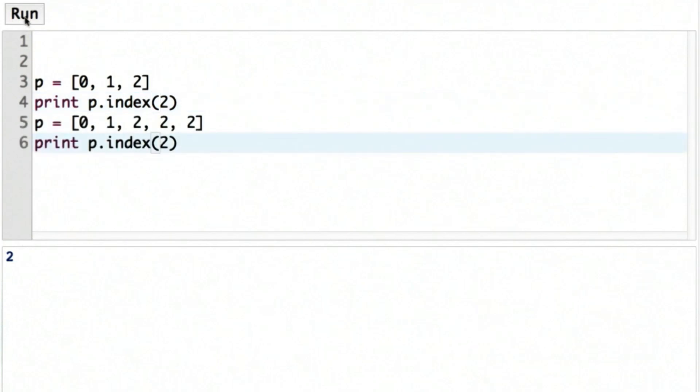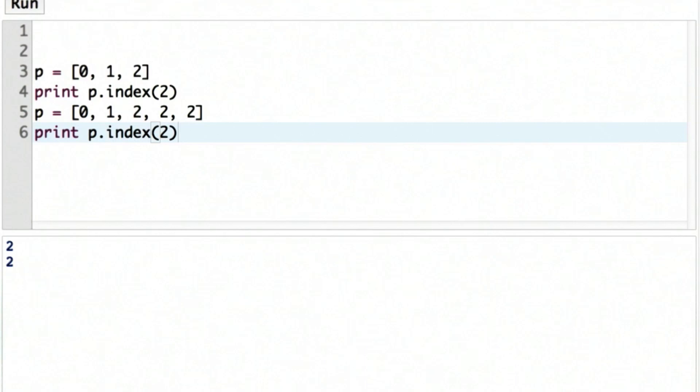For the second example, we'll add more 2's in the list, and we see that it always gives us the first one. So the result returned by p.index is the first place in the list where that occurs.